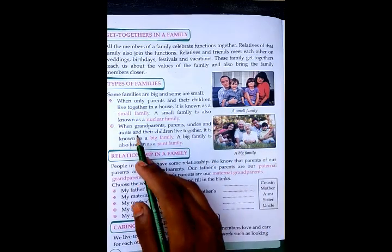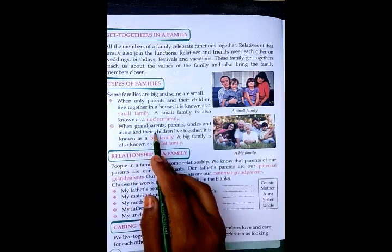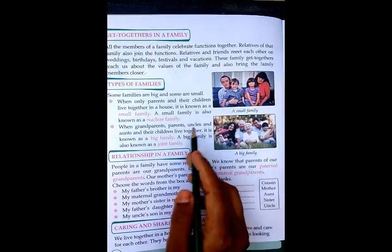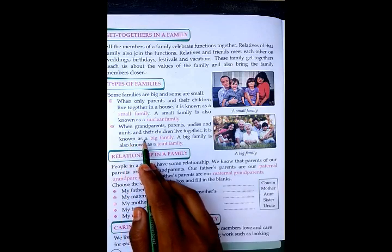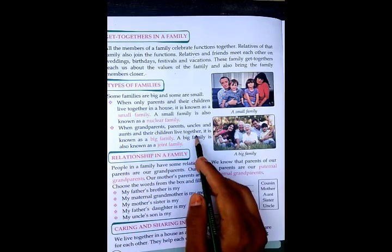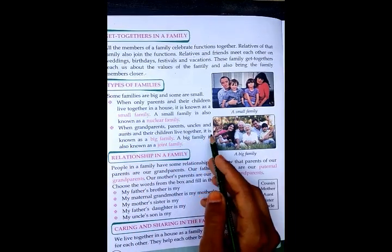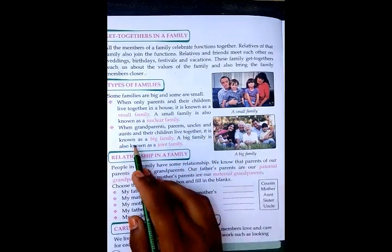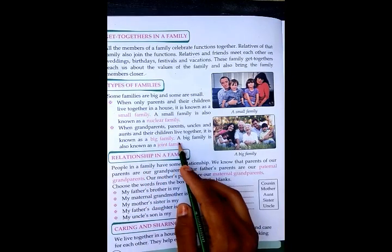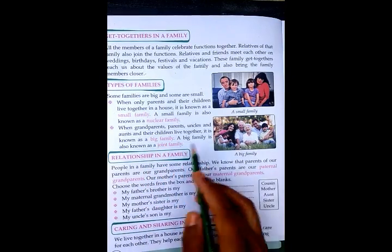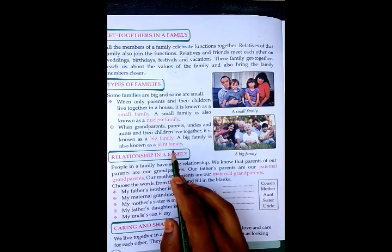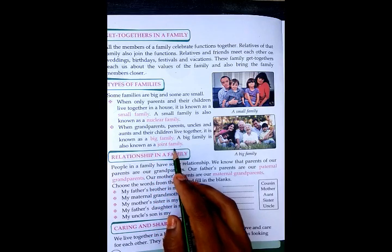When grandparents and aunts and their children live together, it is known as a big family. A big family is also known as a joint family.